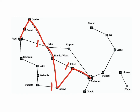So the advantage of depth-first search is that it uses very little memory compared to breadth-first or uniform cost search. The disadvantage is that it doesn't find the shortest path to the goal — it just finds any path. And in some cases it may take a long time to find it.